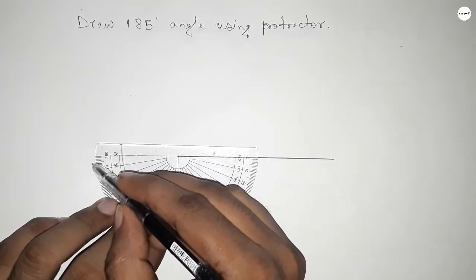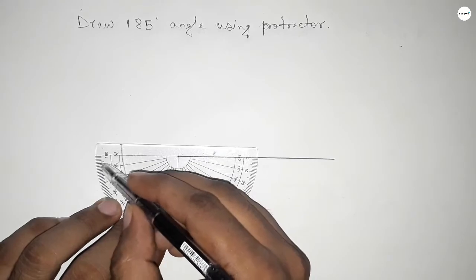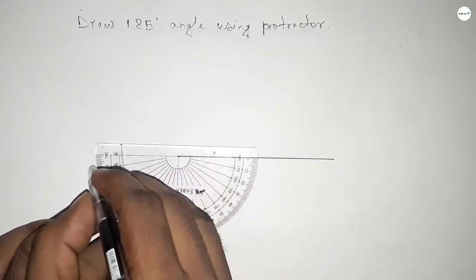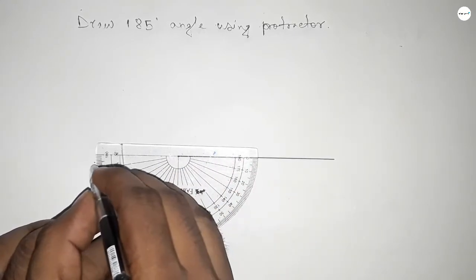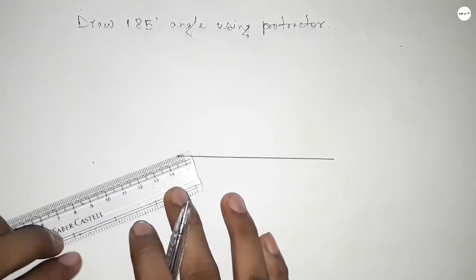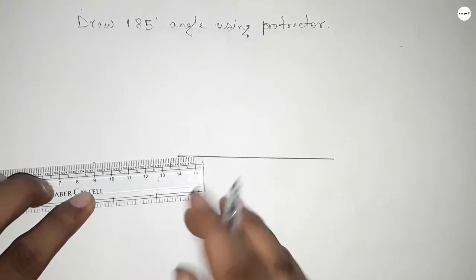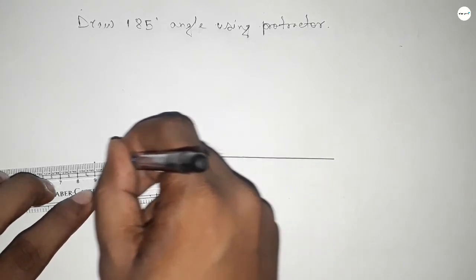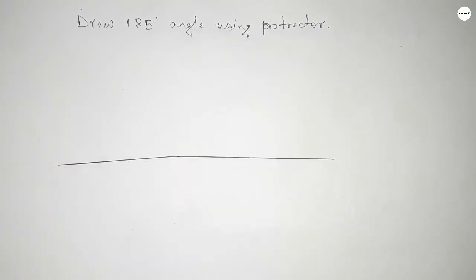So if you add 5 here with 180 then we can get 185 degree angle. So by joining this we get 185 degree angle. So this is 185 degree angle.